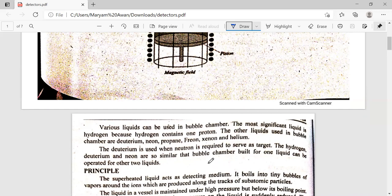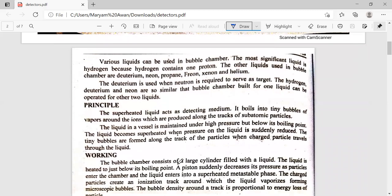If hydrogen, deuterium, and other liquids are similar, you can build a bubble chamber with the liquid. The principle is that the superheated liquid will act as a detecting medium. It will boil into tiny bubbles of vapors which are produced along the track of the subatomic particles. It will become tiny bubbles or vapor and then we will detect it.